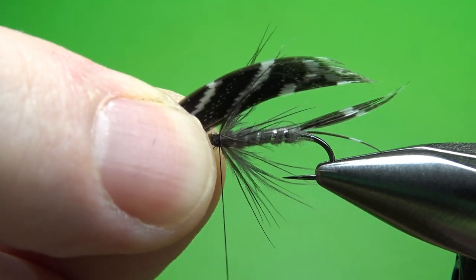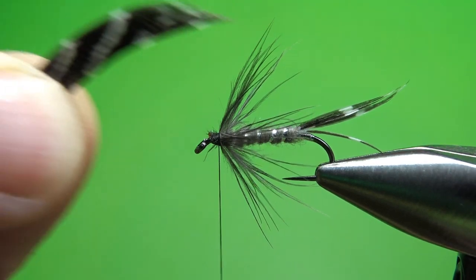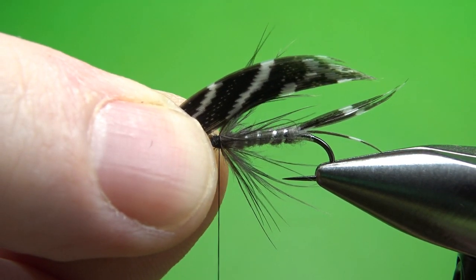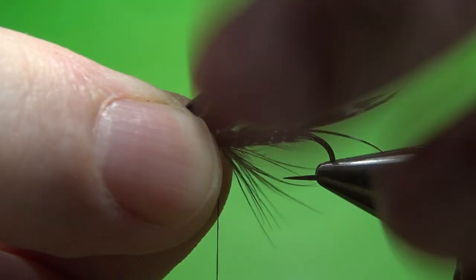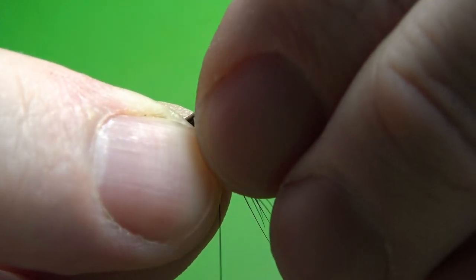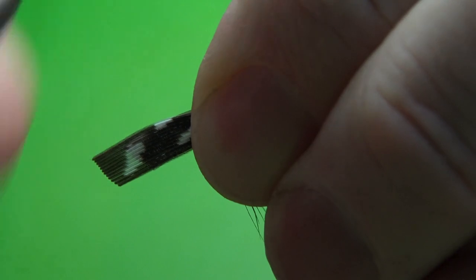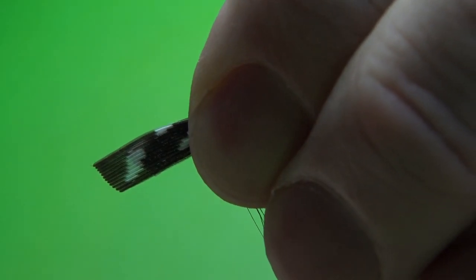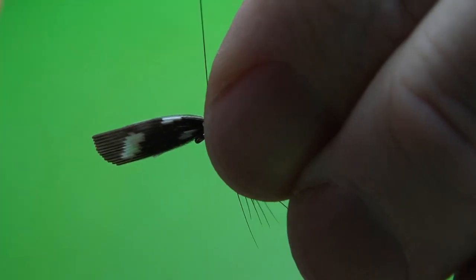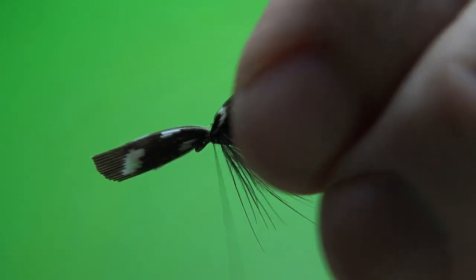And tie this on like your winged wet flies. Measure your length. Make sure your thread's hanging where you want the back of your head to be. And then just pinch it pretty tightly right here with your material hand. Hold it firm against the top of that hook and do a pinch wrap, but pull down firm but slowly as you kind of move it forward. Now you can take your second wrap and check your position.